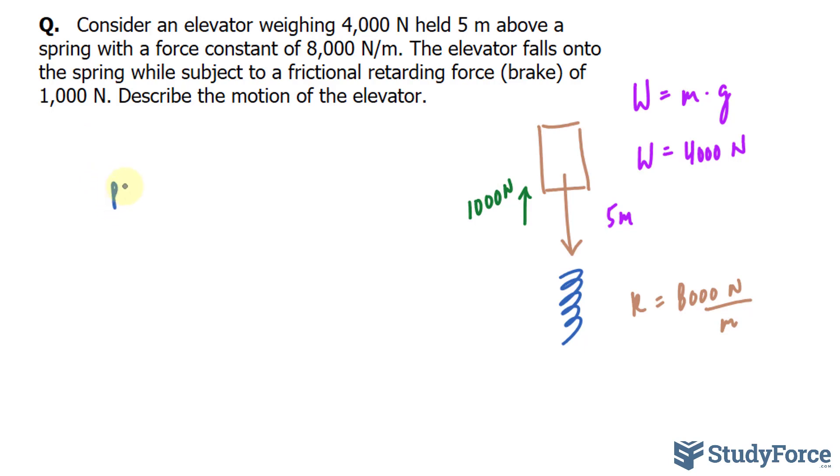Potential energy is calculated using mass times gravity times height. Now we already know mass times gravity. It's given in the question as weight, being 4,000 newtons. So I'll write down 4,000 newtons in place of mg, and that's being multiplied by a height of 5 meters.